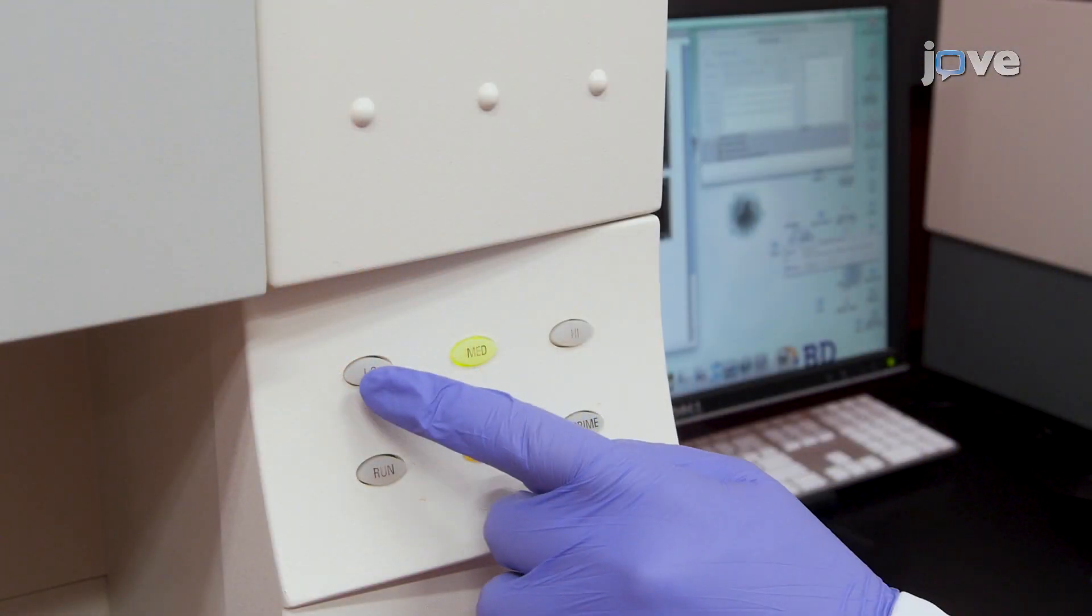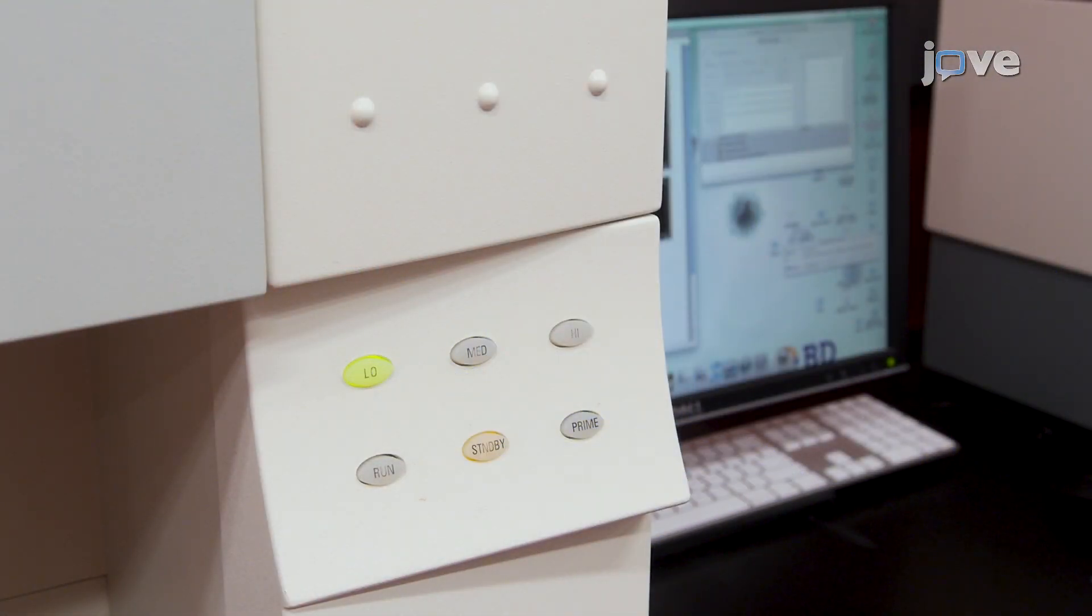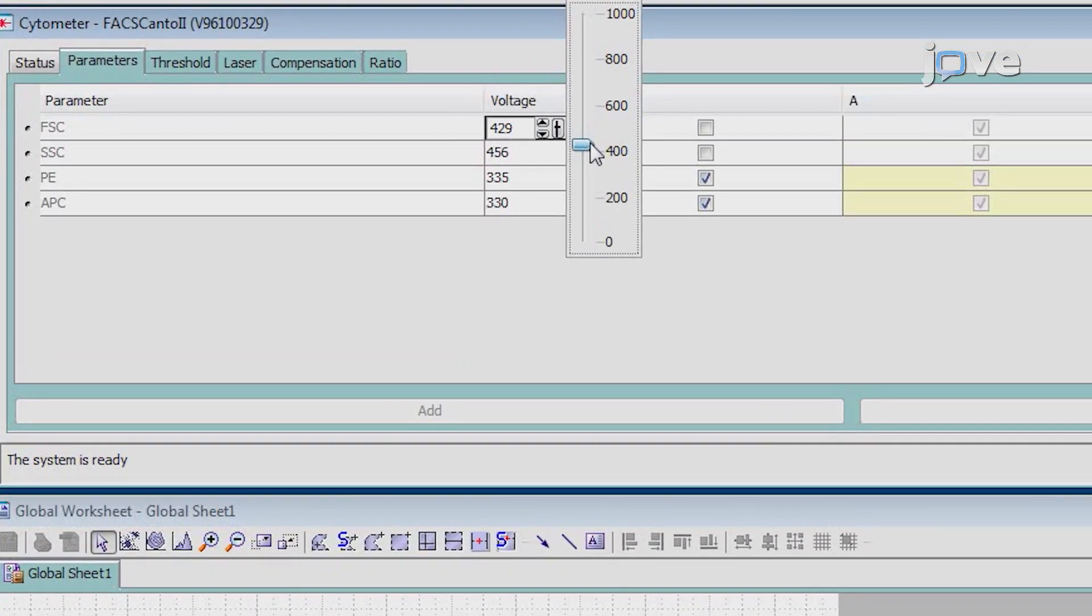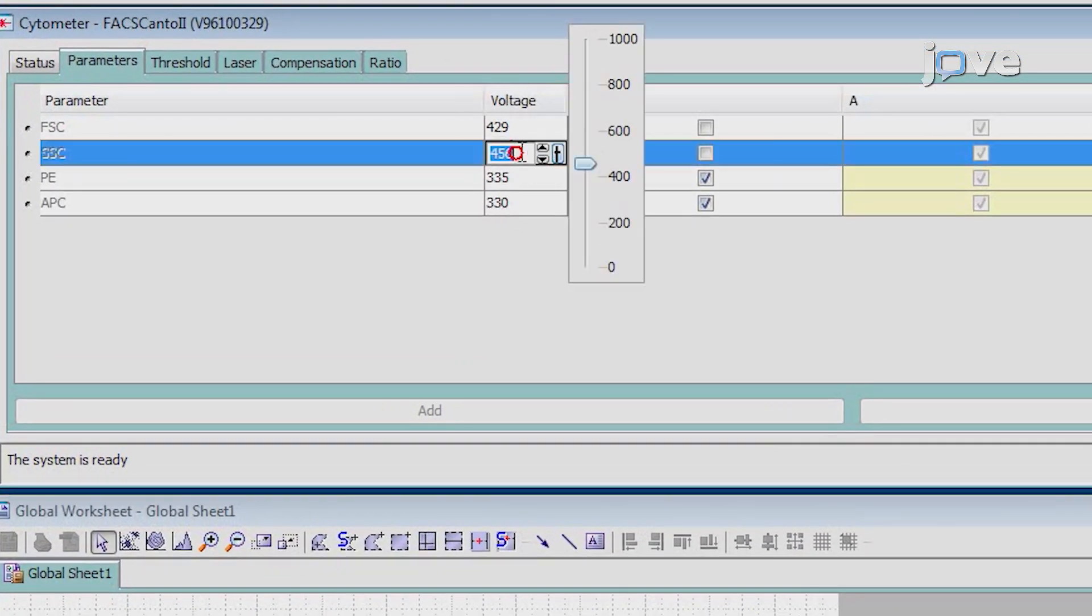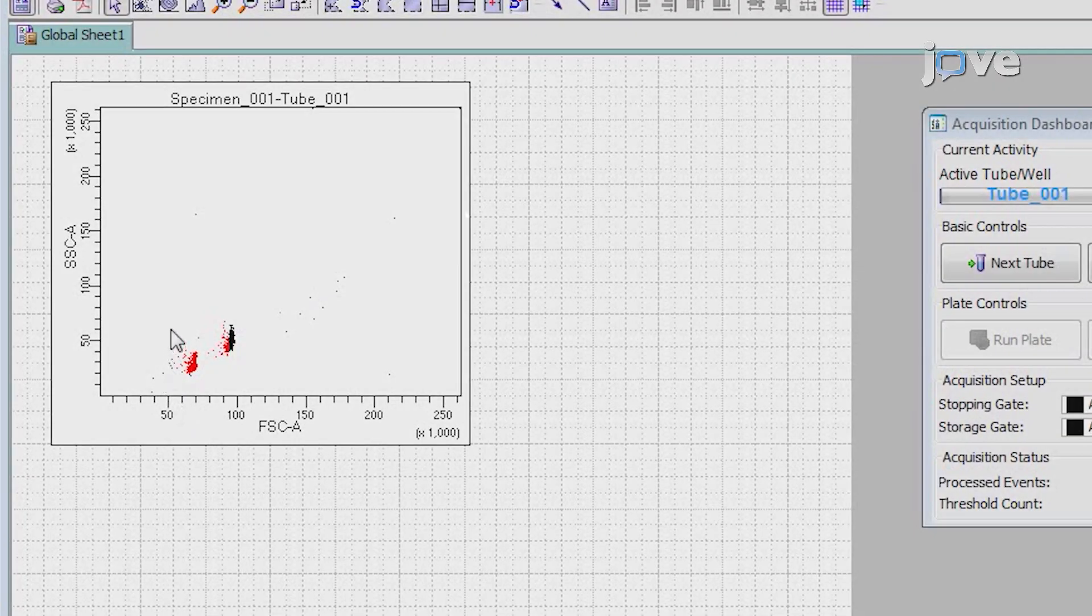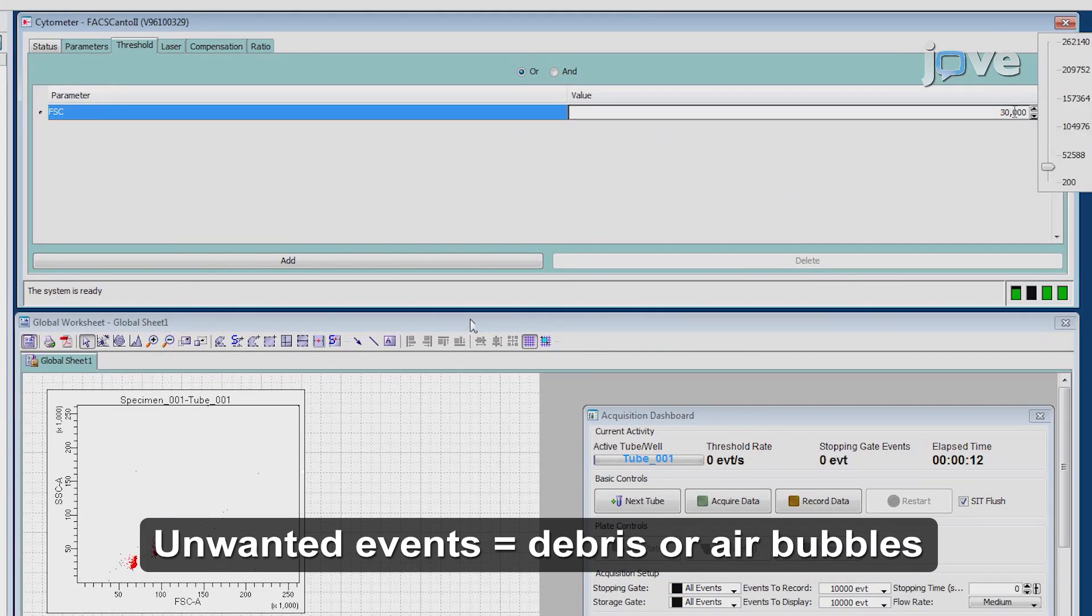Set the flow cytometer flow rate to low. Run the raw beads, carefully adjusting the gain and voltage for forward scatter and side scatter so that both size populations of these beads are visibly separated and easy to gate. Adjust the forward scatter threshold to exclude unwanted events.